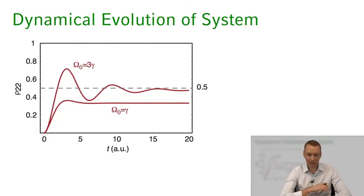Driving our atom but in addition having damping in the system, how is this going to be different from the coherent evolution that we calculated in the Schrodinger picture? Okay, let's get started.